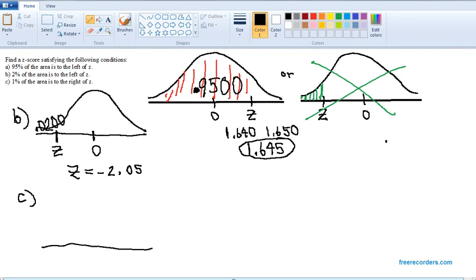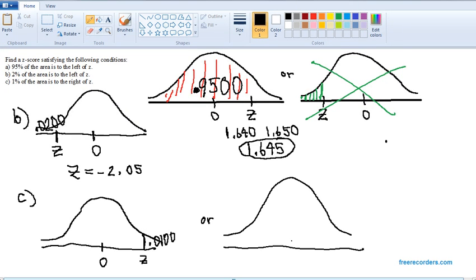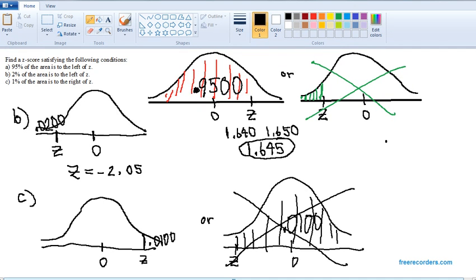In part C, we want 1% of the area to the right of z. Well, if z is positive, that would put 0.0100 there, or if z were negative to the left of 0, that would make all of this area 0.0100. Obviously, the second area is way more than 0.5. It can't be a small number like 0.0100.